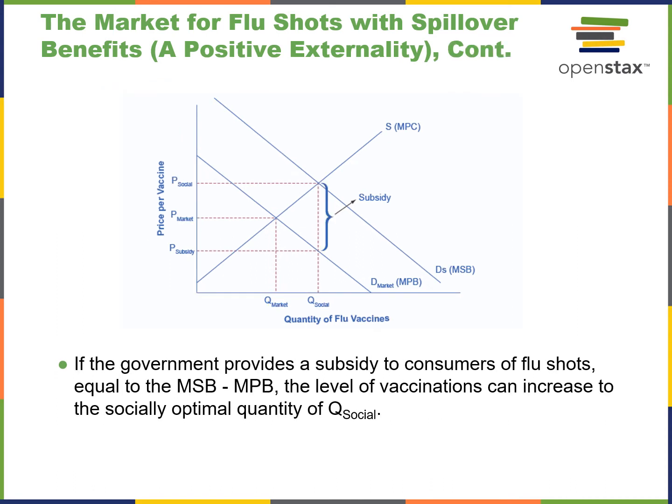If the government provides a subsidy equal to the marginal social benefit minus the marginal private benefit, then the level of vaccinations can increase to the socially optimal level Q. You can see the difference a subsidy makes in the diagram.